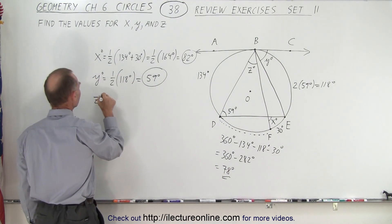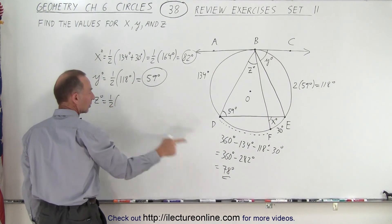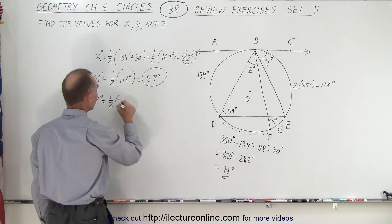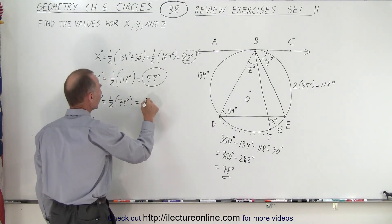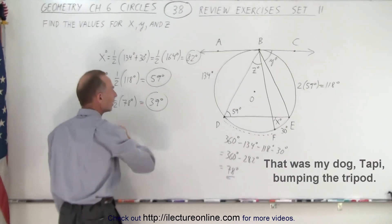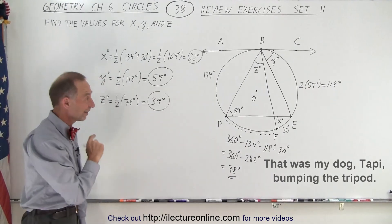z degrees is equal to one-half the measure of that arc, which is 78 degrees. Therefore, z equals 39 degrees. And there you go. That is how it's done.